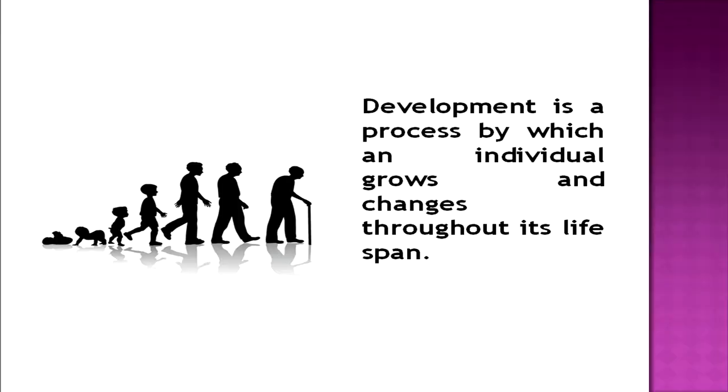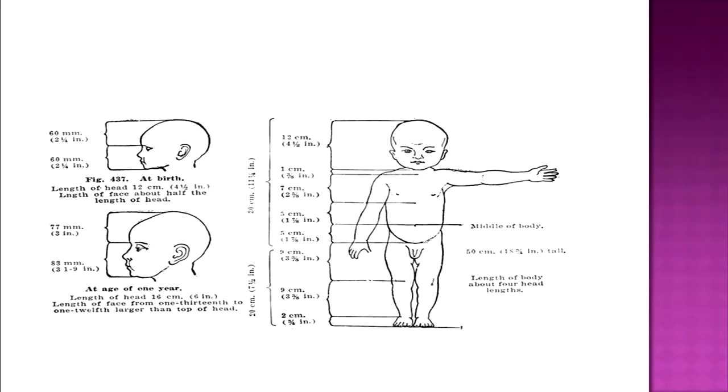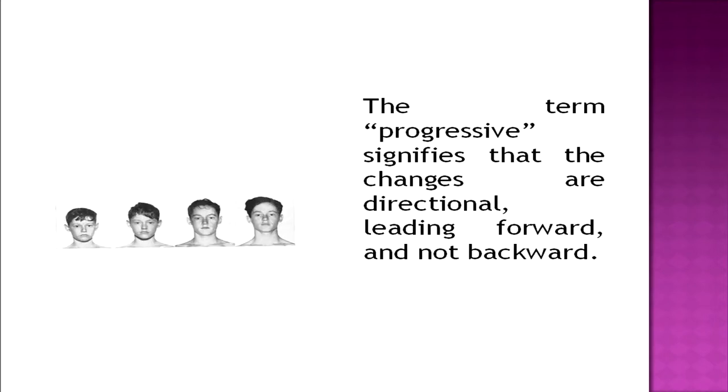Let us begin with what we actually mean by development. Development is a process by which an individual grows and changes throughout its lifespan. This change may be defined as a progressive series of changes which are orderly and coherent and which lead towards the goal of maturity — that is, how we mature over the years. The term 'progressive' signifies that the changes are directional, leading forward and not backward.